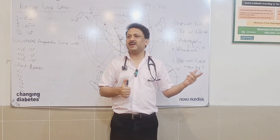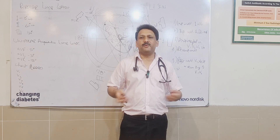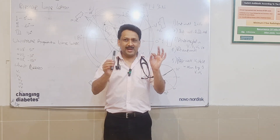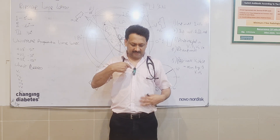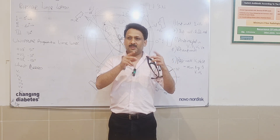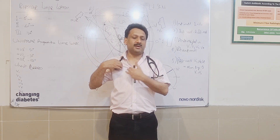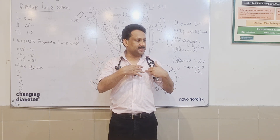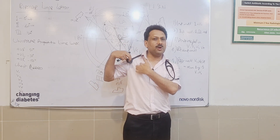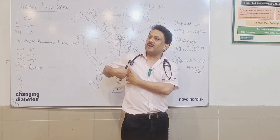For the right ventricular wall, the answer is simple: we place cameras there just as we place chest lead cameras V1 through V6. The same way, we place cameras on the right side — V1 and V2 remain at the same place, but we additionally place RV3, RV4 at the mid-axillary line, RV5 at the anterior axillary line, and RV6 at the mid-axillary line.